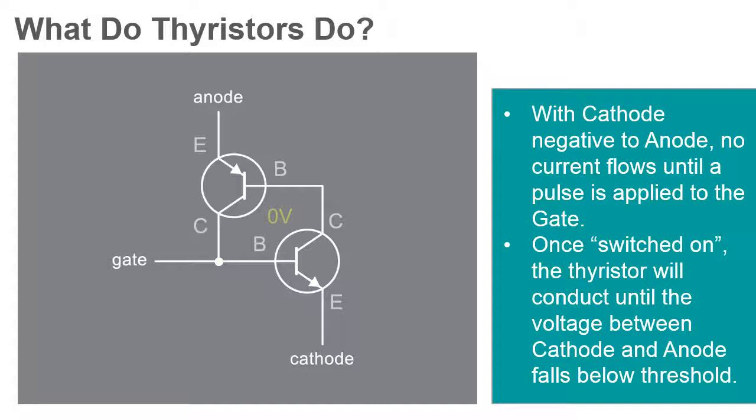A thyristor is not a proportional device like a transistor. In other words, a thyristor can only be fully on or off, while a transistor can operate in between on and off states. This makes a thyristor unsuitable as an analog amplifier, but useful as a switch.